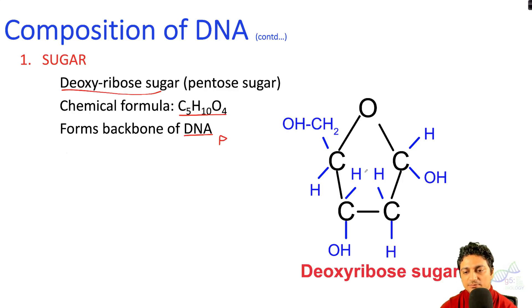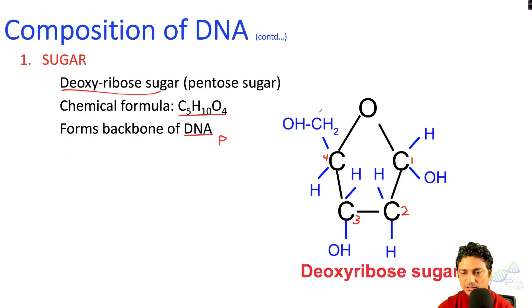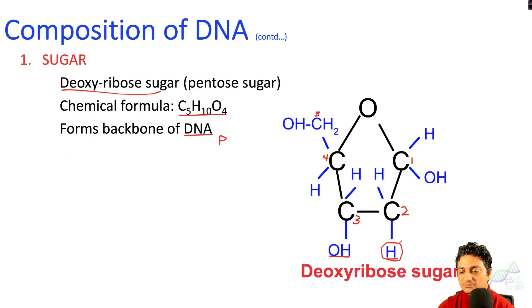This is the chemical structure of deoxyribose sugar. It contains five different carbons: carbon number one, second carbon, third carbon, fourth carbon, and fifth carbon. At carbon two, instead of a hydroxyl group it has only hydrogen. However, in RNA there is a ribose sugar which has a hydroxyl group. In DNA it lacks one oxygen, therefore it is called deoxyribose sugar — same as ribose sugar but lacking one oxygen.